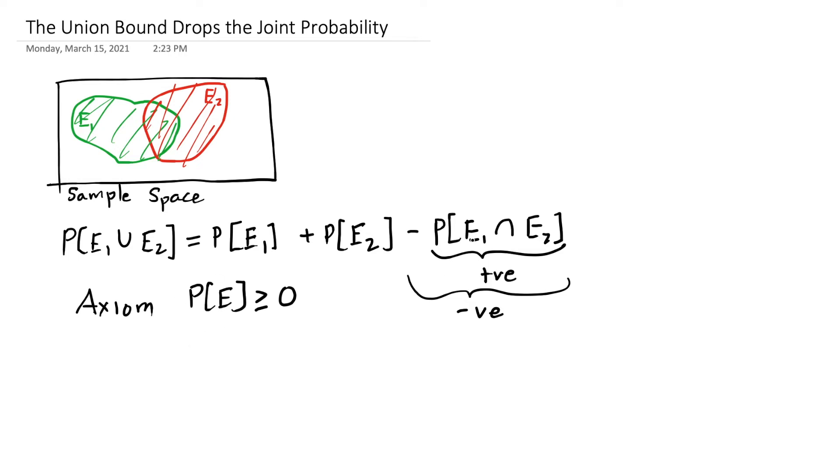And by ignoring that part, by dropping this joint probability, this side becomes larger.